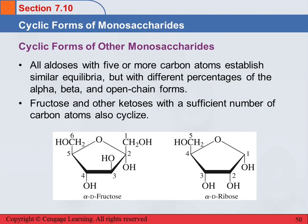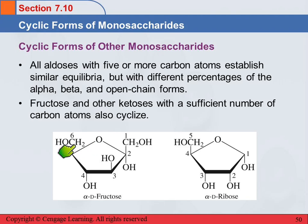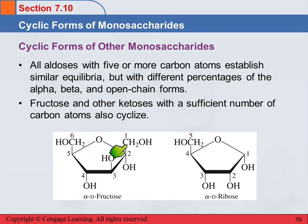Fructose and other ketoses that have enough carbon atoms will also form rings. Here is alpha-D fructose. Fructose is a ketose, so it's a ketone — a six-carbon ketone. But because the carbonyl group is on the second carbon instead of the first carbon, it ends up forming a five-membered ring.